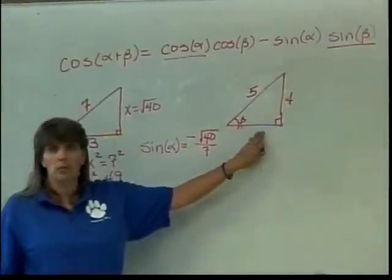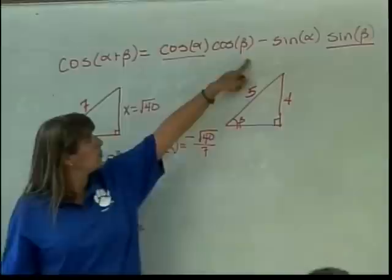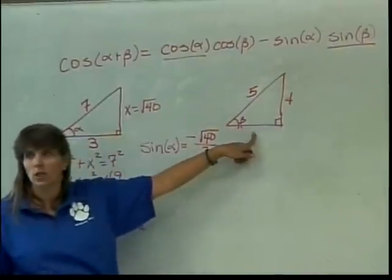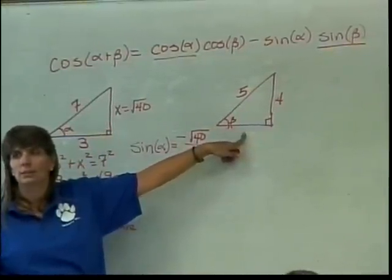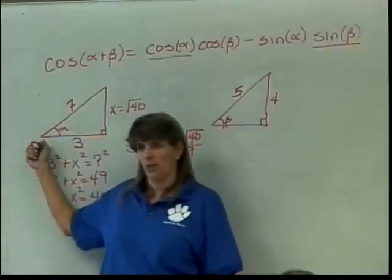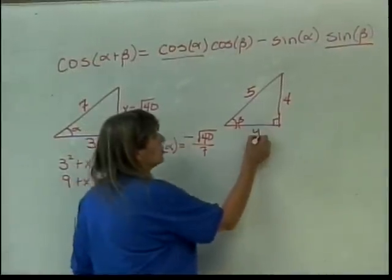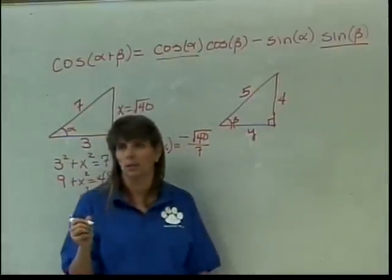Opposite is 4. Hypotenuse is 5. So in order to find my cosine of beta, which is the thing that I'm still missing, I'll need to find the adjacent side. What do you want to call it? Not x. We already used x in this problem over here. So the person who said y was thinking ahead. Good move.